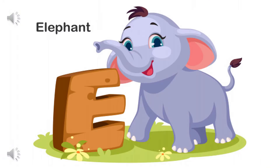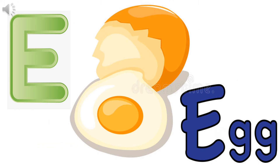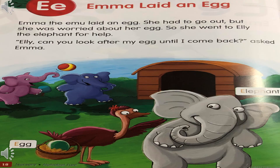Children, we have already learned the letter E. Come on, let's revise it once again. E says 'e', E for elephant. E says 'e', E for egg. Now the teacher is going to read out a story. Please listen carefully and identify the words that begin with the letter E.